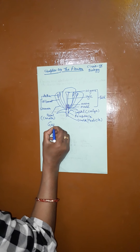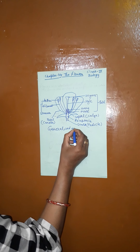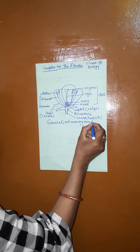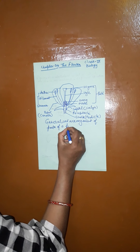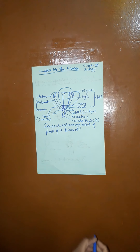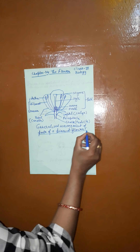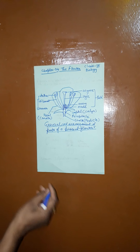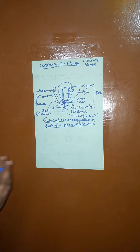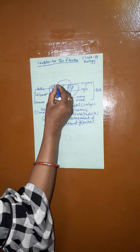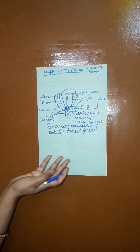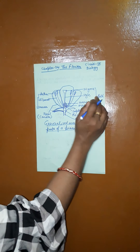This is the generalized arrangement of parts of a bisexual flower. Bisexual means both male and female parts are present in a single flower. The flower contains four whorls: the outermost is the sepal or calyx (first whorl), second is the corolla or petal, third is the stamen or androecium (male part), and the fourth and innermost whorl is the pistil or gynoecium (female part).